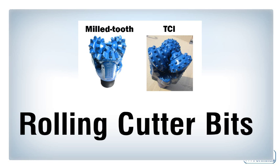There are two types of rolling cutter bits: milled tooth bits and tungsten carbide inserts. These bits are classified by how the teeth are manufactured.